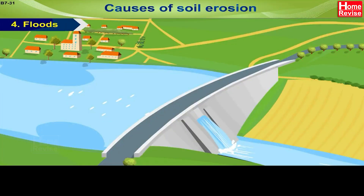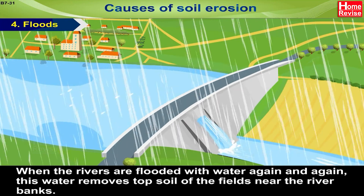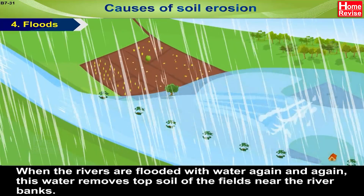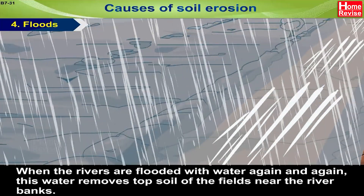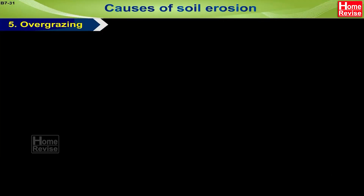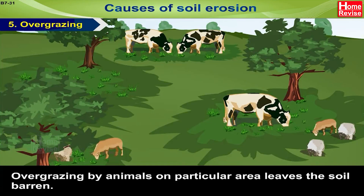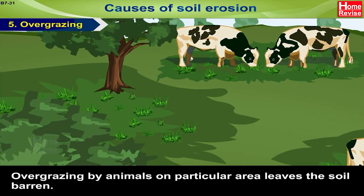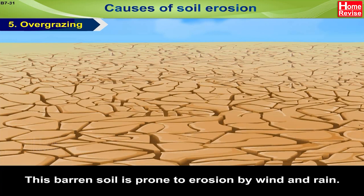Floods: when the rivers are flooded with water again and again, this water removes topsoil of the fields near the river banks. Overgrazing: overgrazing by animals on a particular area leaves the soil barren. This barren soil is prone to erosion by wind and rain.